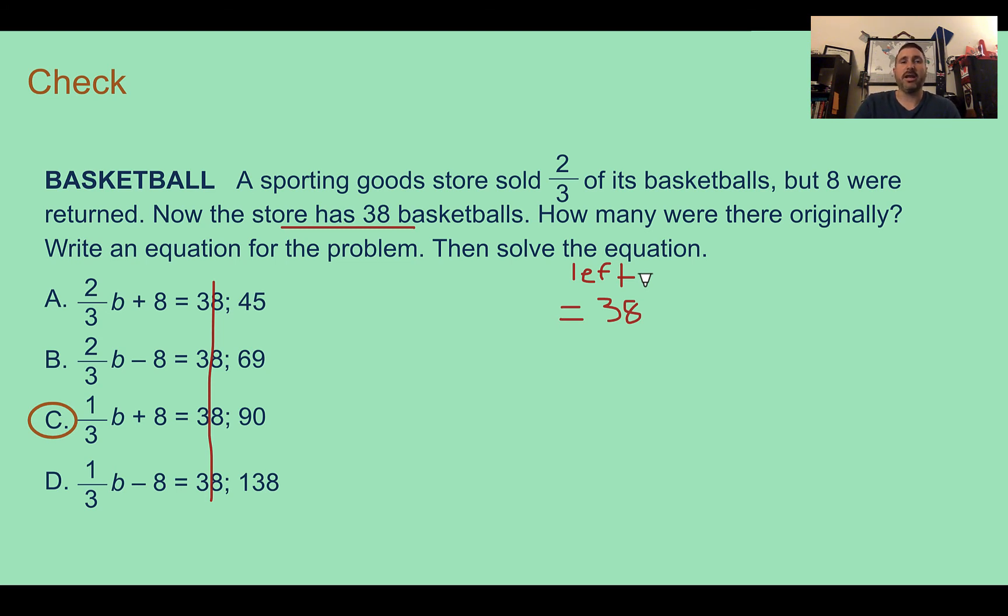Now, 38 is how many we have left, but the fraction is talking about how many it sold. So if it sold two-thirds of the basketballs, so let's say I have a fraction bar here, and we will divide it in two-thirds. The store sold two-thirds. So this is sold, this is sold, which means this is the amount that has left. So only one-third of the basketballs are left. So one-third of them are left, and then our total is actually higher than it was because people returned the basketballs.